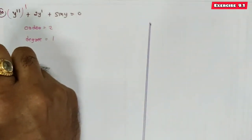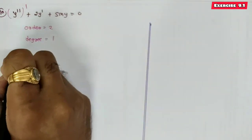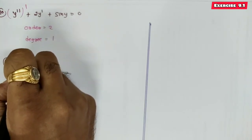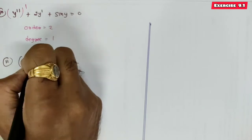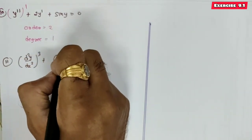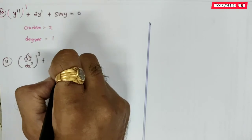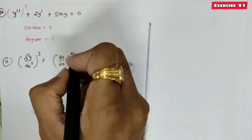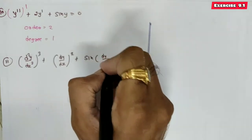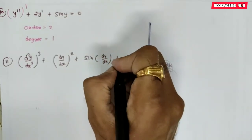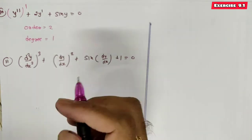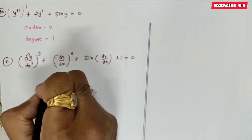Equation 11: (d²y/dx²)³ + (dy/dx)² + sin(dy/dx) + 1 = 0. What are the order and degree of this equation? The highest order derivative is d²y/dx², so order is 2.